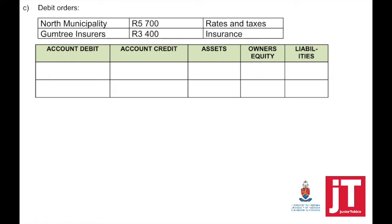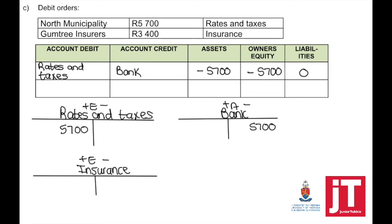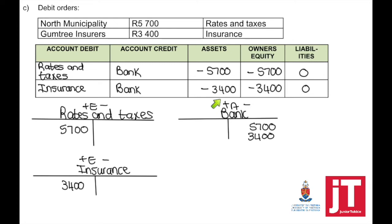Adjustment C — debit order. We paid North Municipality for rates and taxes, and Country Insurers for insurance. Bank is going to be credited because a payment is made. Account debited: rates and taxes, 5,700. Effect on the accounting equation: assets minus; because my expense increases, it has a negative effect on the owner's equity. To show the insurance: bank is credited, account debited is insurance. Effect on the accounting equation: assets minus; because my expense increases, it has a negative effect on the owner's equity.